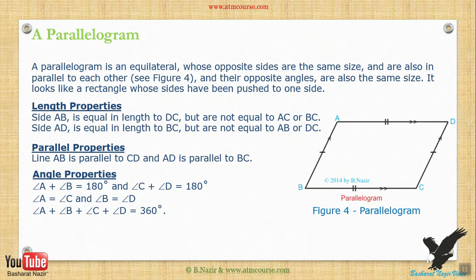Angle properties of a parallelogram: angle A plus angle B equals 180 degrees. Angle A plus angle B plus angle C plus angle D equals 360 degrees.